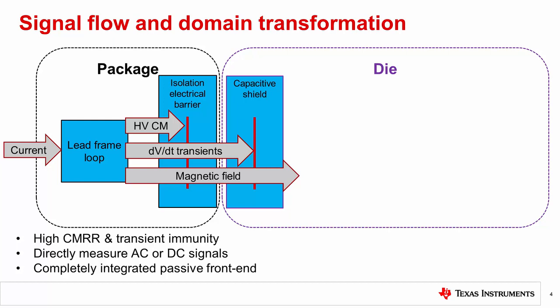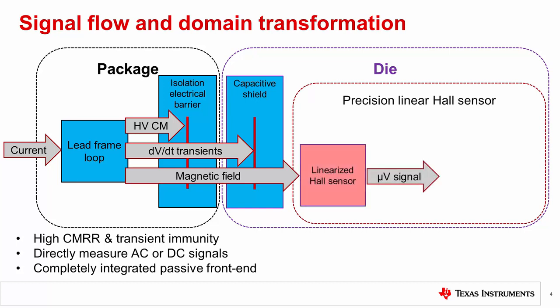The completely integrated passive front end removes the need for any isolated supply, electronics, or external components on the high voltage side. The resulting magnetic field is a relatively small signal, requiring a high precision linear Hall sensor IC in order to accurately be measured. A linearized Hall sensor converts the magnetic field back into the electrical domain in the form of a small voltage signal on the order of microvolts.